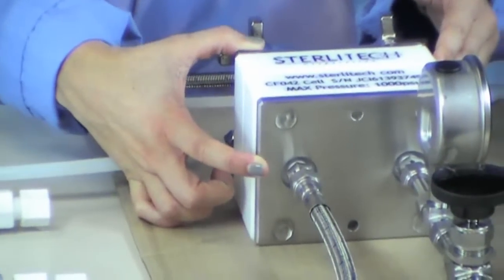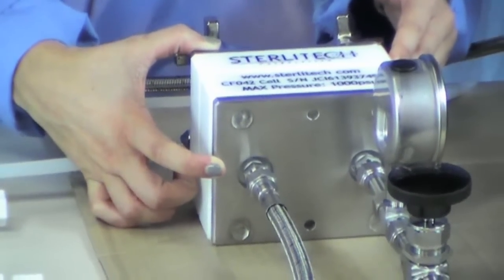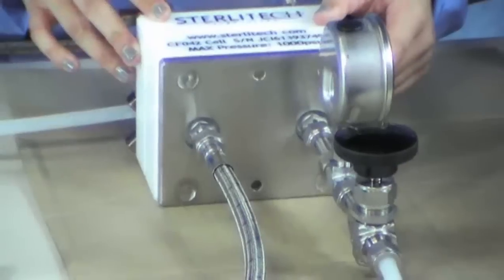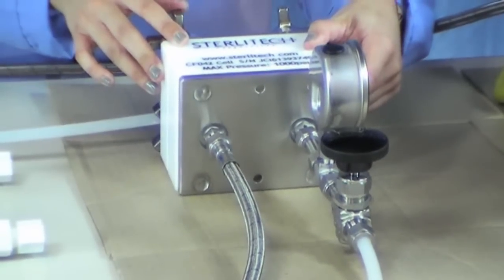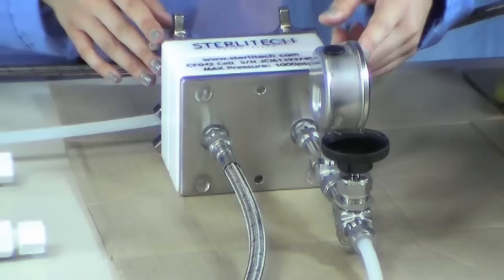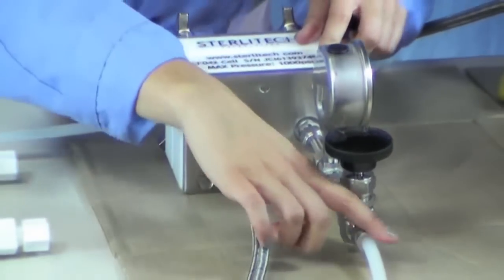The pressure hose will be connected into your inlet on the CFO42 cell, which is a quarter inch NPTE fitting. The outlet of the CFO42 cell also has a quarter inch NPTE fitting and will be connected to your concentrate control valve and again to low pressure tubing.